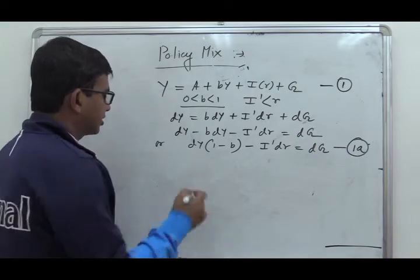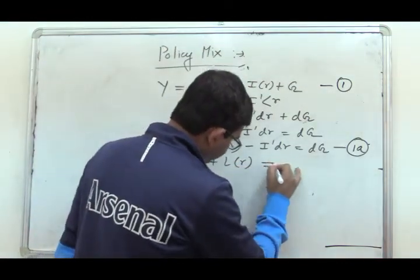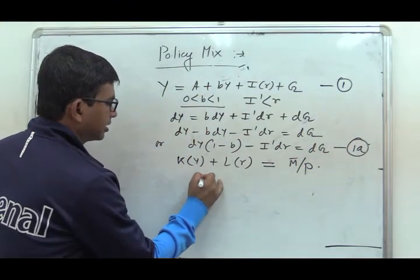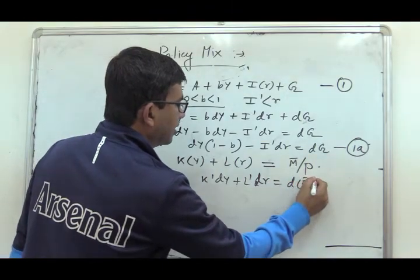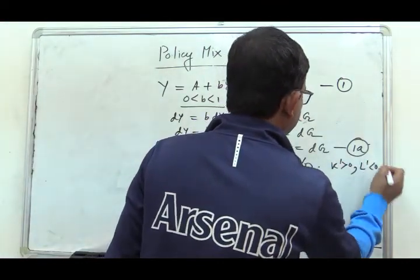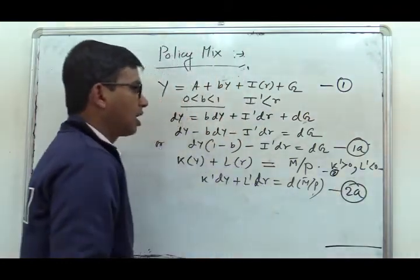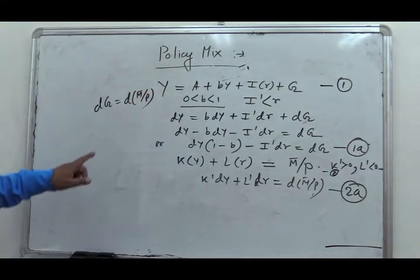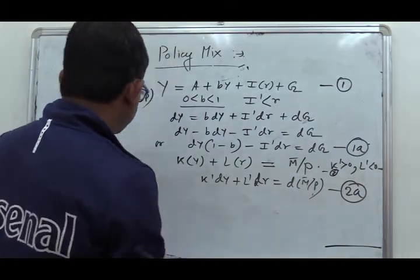Now let us consider the money market equilibrium condition: K·Y + L·R = M1/P, where K-dash is greater than 0 and L-dash is less than 0. This is equation 2 and its differentiated form is equation 2A. Our first assumption is that DG = dM/P, so we can replace dM/P by DG. Now equations 1A and 2A can be set into matrix multiplication form.